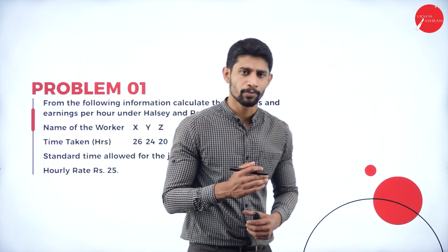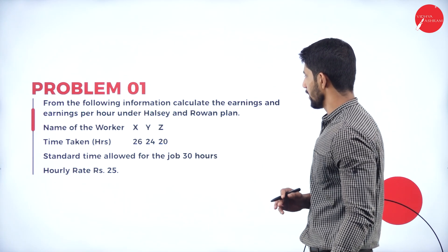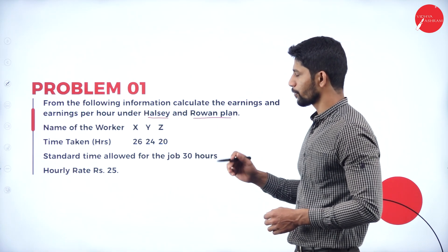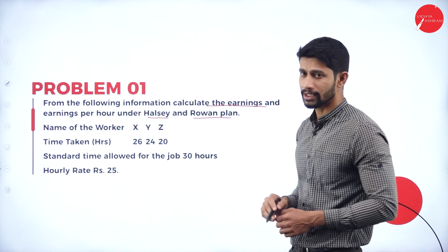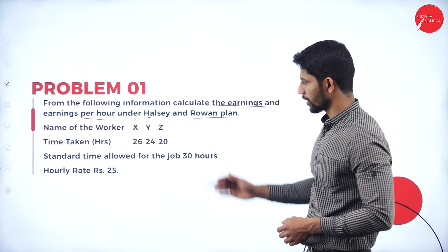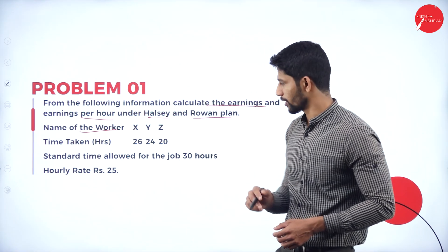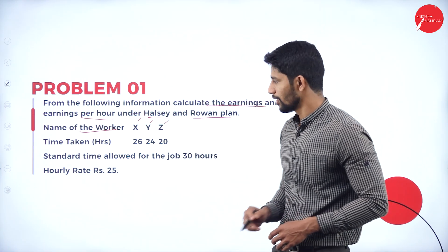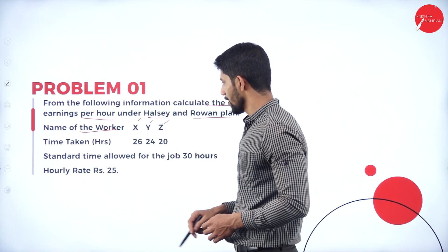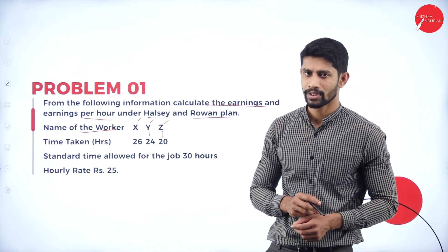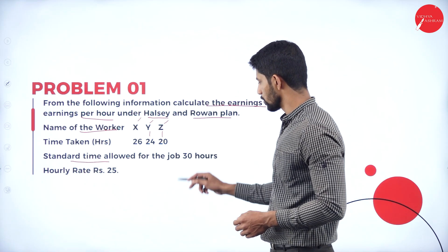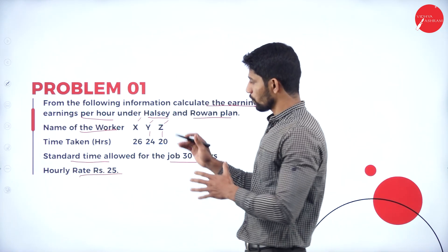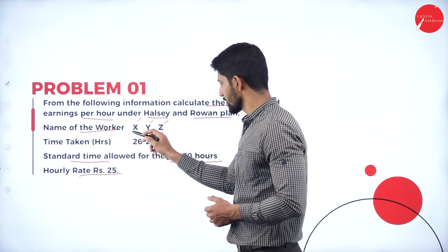Here is the first problem. From the following information, calculate the earnings and earnings per hour under Halsey and Rowan Plan. We are supposed to find out the total earnings and earning per hour under both plans. The information given includes the name of the worker and time taken. We have three workers: Mr. X, Mr. Y, and Mr. Z. The time taken by Mr. X is 26 hours, by Mr. Y is 24 hours, and by Mr. Z is 20 hours.